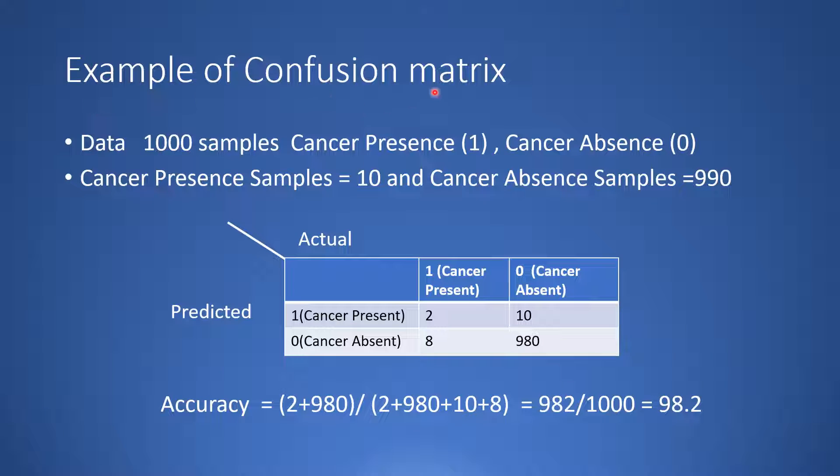Let us look at an example of a confusion matrix. Here we have 1000 samples in our data and the positive class is cancer presence and the negative class is cancer absence. We have 10 positive samples and we have 990 negative samples.